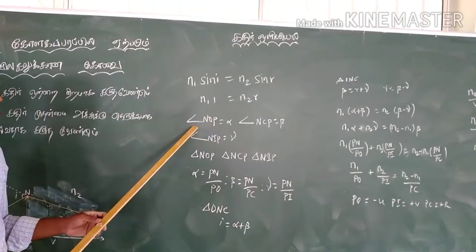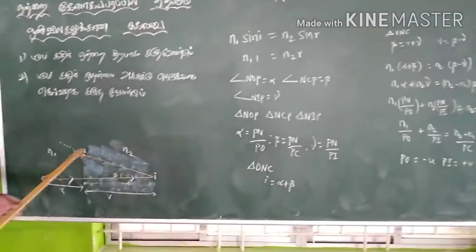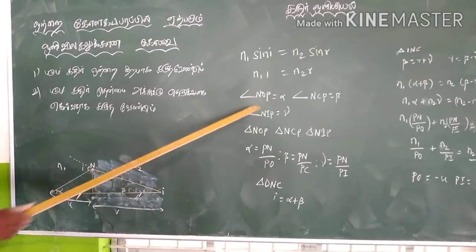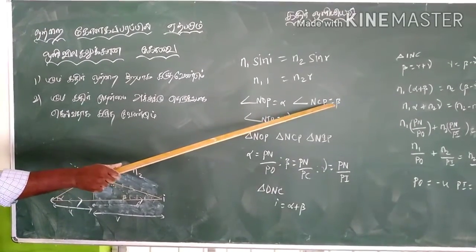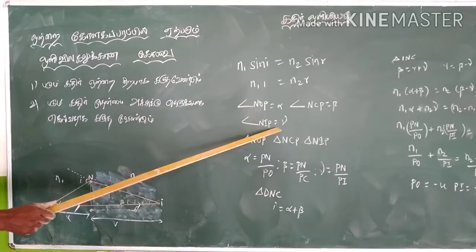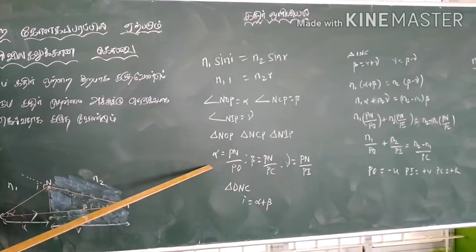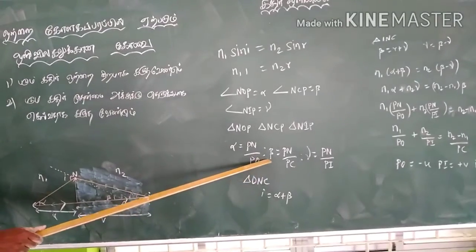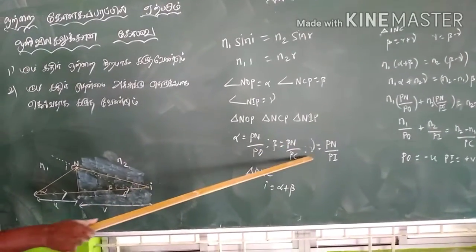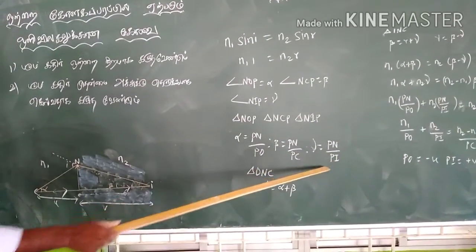We will have three triangles: NOP with angle alpha, NCP with angle beta, and NIP with angle gamma. Alpha equals PN by PO, beta equals PN by PC, gamma equals PN by PI.